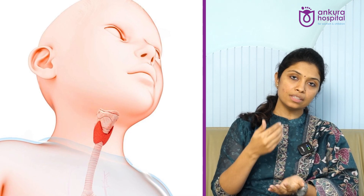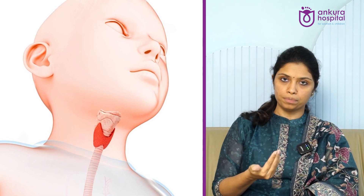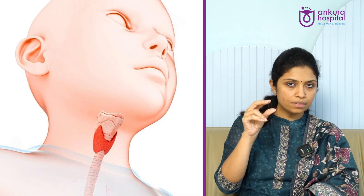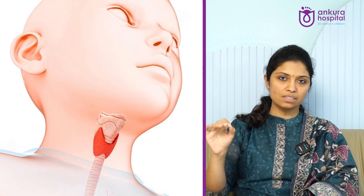The two common reasons for having thyroid problems from birth are: first, if the thyroid gland has not developed properly — either it is absent or small in size, which is called dysgenesis. Second, if the thyroid gland is present but still not able to produce hormones properly, it is called dyshormonogenesis. These are the two important reasons for developing thyroid problems in the newborn period.